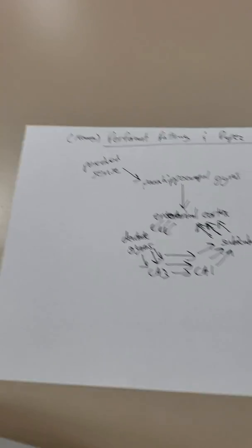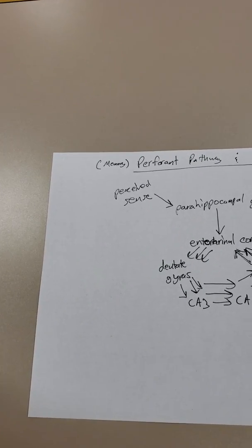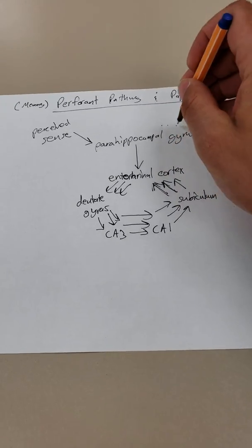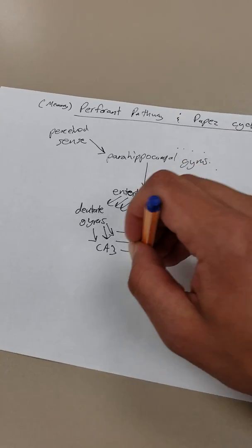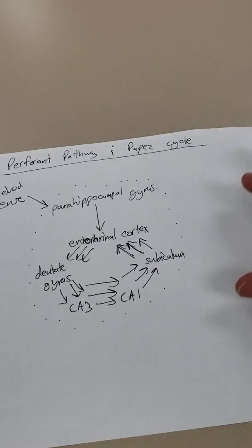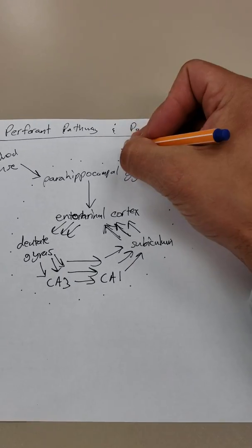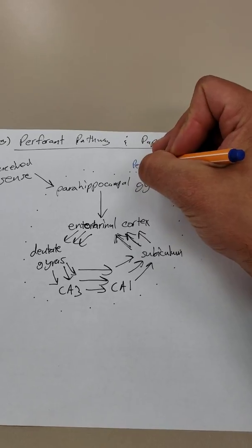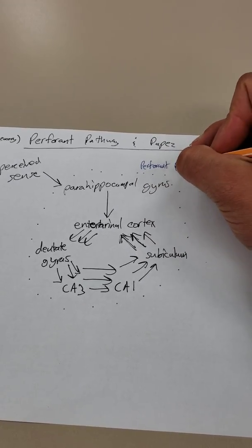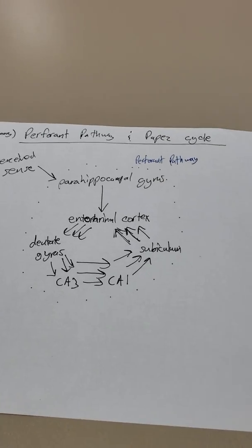Eventually, this information is going to travel to the cortex and be stored. And that's how you get long-term memories. So, this entire section here, that is my perforant pathway. Again, that's just how memories are created. It's kind of how the magic happens within the hippocampus.